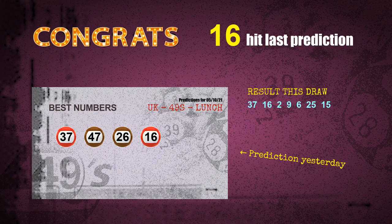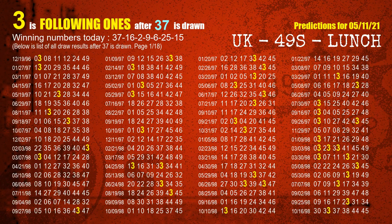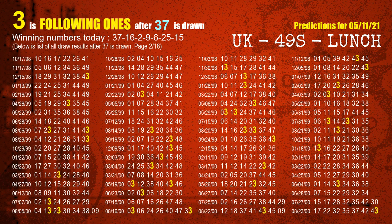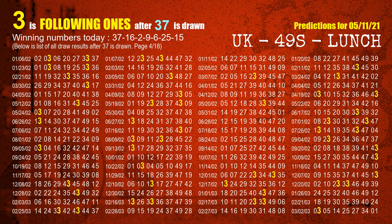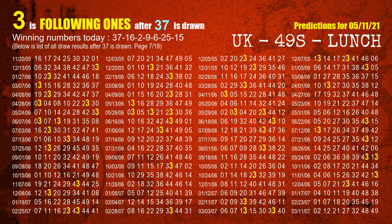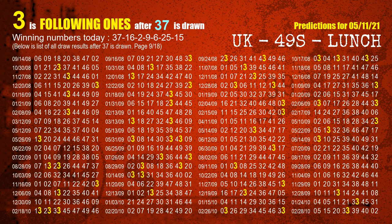We will tell you how to find the winning numbers of next draw step by step. First, we find out the following ones through today's result. Following numbers refer to those numbers being picked on the next draw after this one, and following ones are the units digit of those following numbers. The first winning number is 37. We list all draw results after a draw with 37 as a winning number. The most frequently following units digit is 3 when 37 is the winning number in the last draw — already highlighted in yellow.